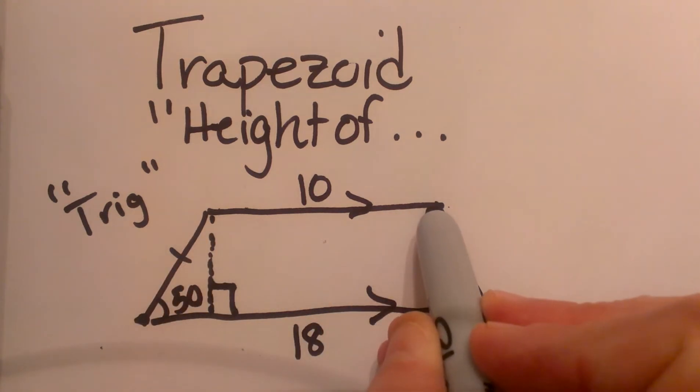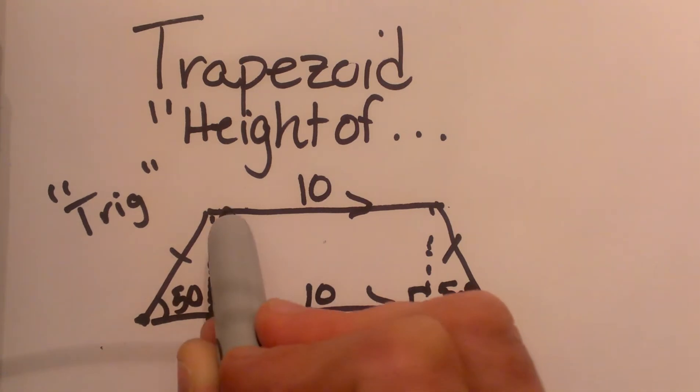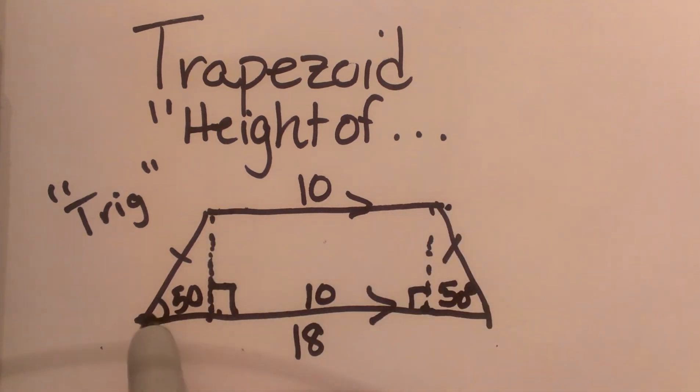So what we can do is drop this right angle down here and the center of this space also is 10 because it matches the length of this space. So that means we have 8 left over to split evenly between these two corners. So that means this side is 4 and this side is 4.